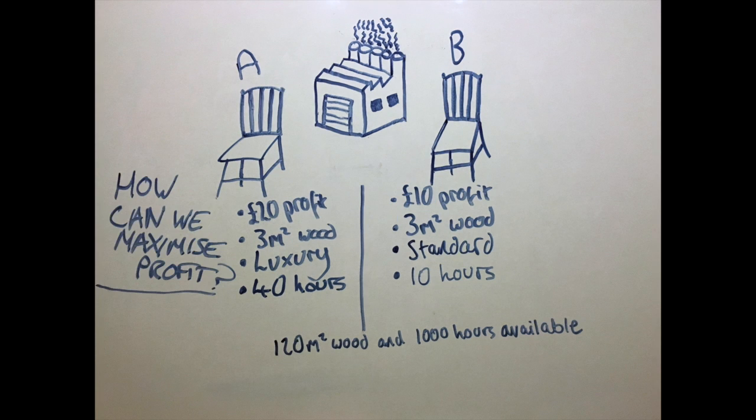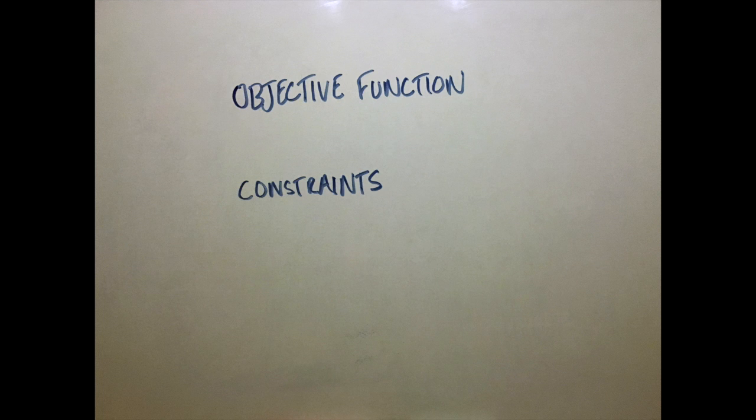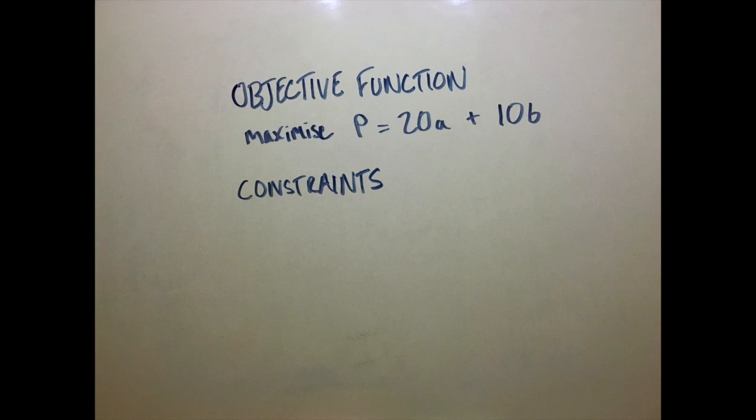First, let's represent this problem as an objective function and its constraints. We know that the factory makes £20 from each chair of type A and £10 from each chair of type B, so this gives us P = 20A + 10B as our objective function.